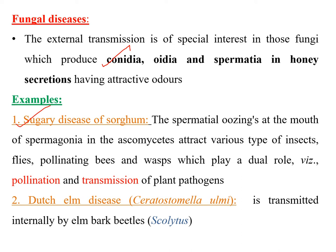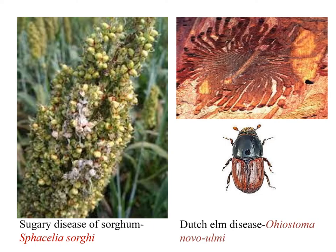In sugary disease of sorghum, spermatia ooze at the mouth of spermogonia — a structure produced in ascomycetes — attracting insects like flies, pollinating bees, and wasps, which play a dual role of pollination and transmission of plant pathogens. The second disease is Dutch elm disease caused by Ceratostomella ulmi, transmitted internally by elm bark beetles of the genus Scolytus.